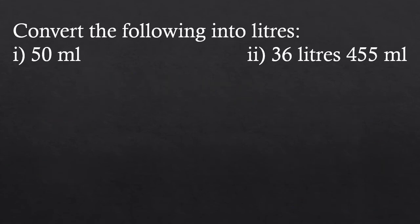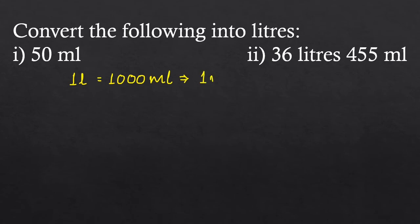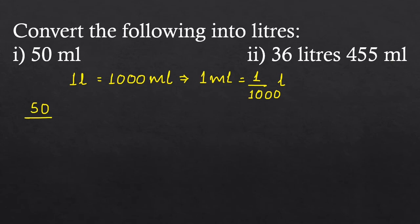The next question is to convert the following into liters. The relation between liter and milliliter is 1 liter equals 1000 milliliters, which means 1 milliliter equals 1 upon 1000 liters. Here, 50 milliliters equals 50 upon 1000 liters. To make the number of digits equal to the number of zeros, we add a zero on the left, writing it as 050, which gives 0.050 liters in decimal.